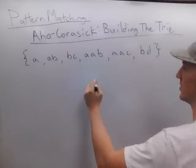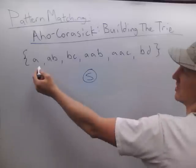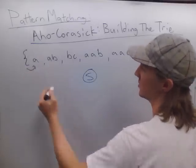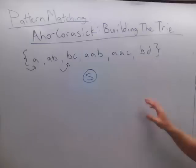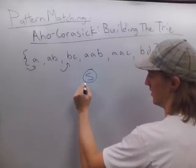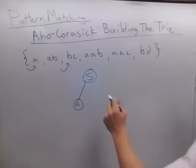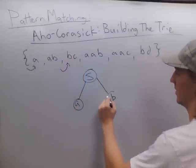So what we're going to do is, given a starting node, we're going to look at every possible character that we can go to from that starting node. You can see that from the empty string, or from no string at all, we can start our string with an A or we can start our string with a B. For this dictionary, those are the only two choices. So when we see character A, we're going to add child A to our starting node, and when we see character B, we're going to add character B to our starting node.